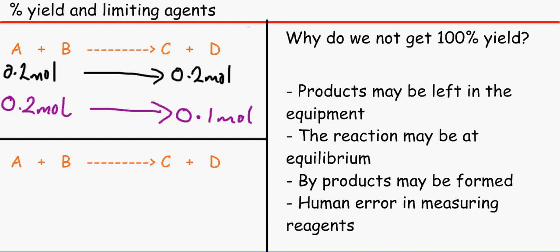So now let's have a look at this one. Say for example we have 0.2 moles of reagent A plus 0.3 moles of reagent B. Realistically we would only be able to get a maximum of 0.2 moles in our reaction. Why is that? It's only because 0.2 moles can only react with 0.2 moles of this.